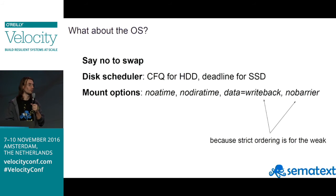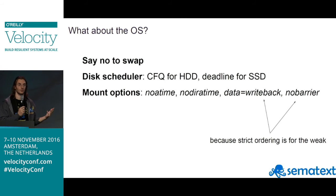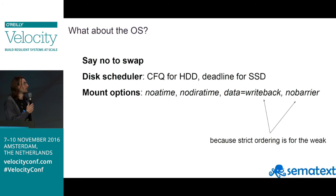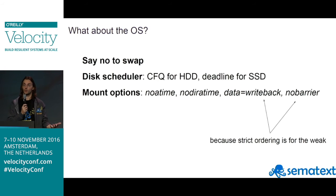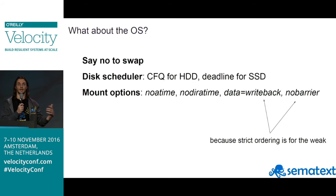On the operating system side, swapping is a big no-no for the JVM. For the disk scheduler, Linux defaults to Completely Fair Queue, which serializes writes and works well for spinning disks. But with SSDs, you probably want the deadline or no-op scheduler instead. You can also gain more IOPS by skipping write of access times, and you can configure the journal to not synchronize those writes.